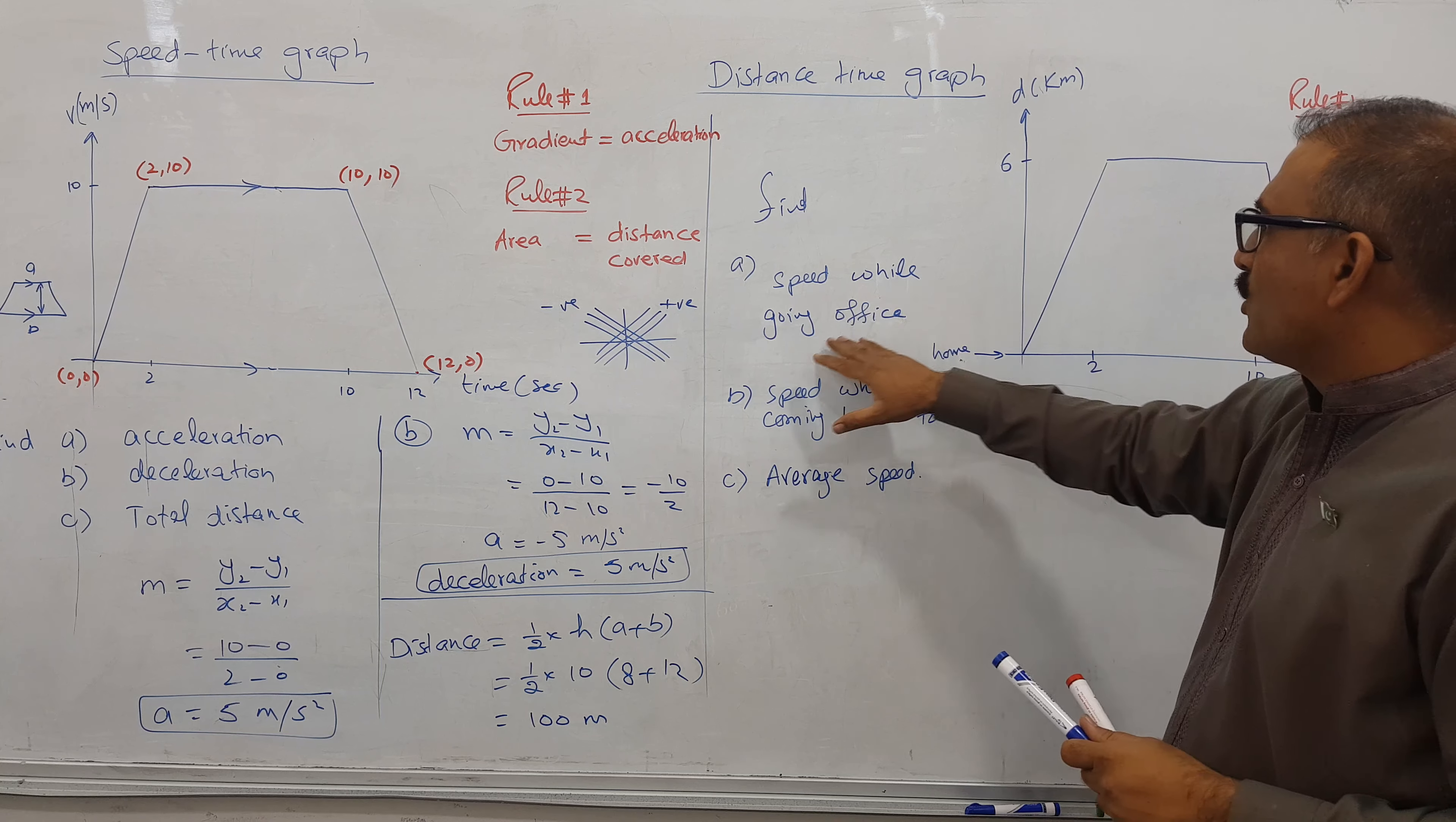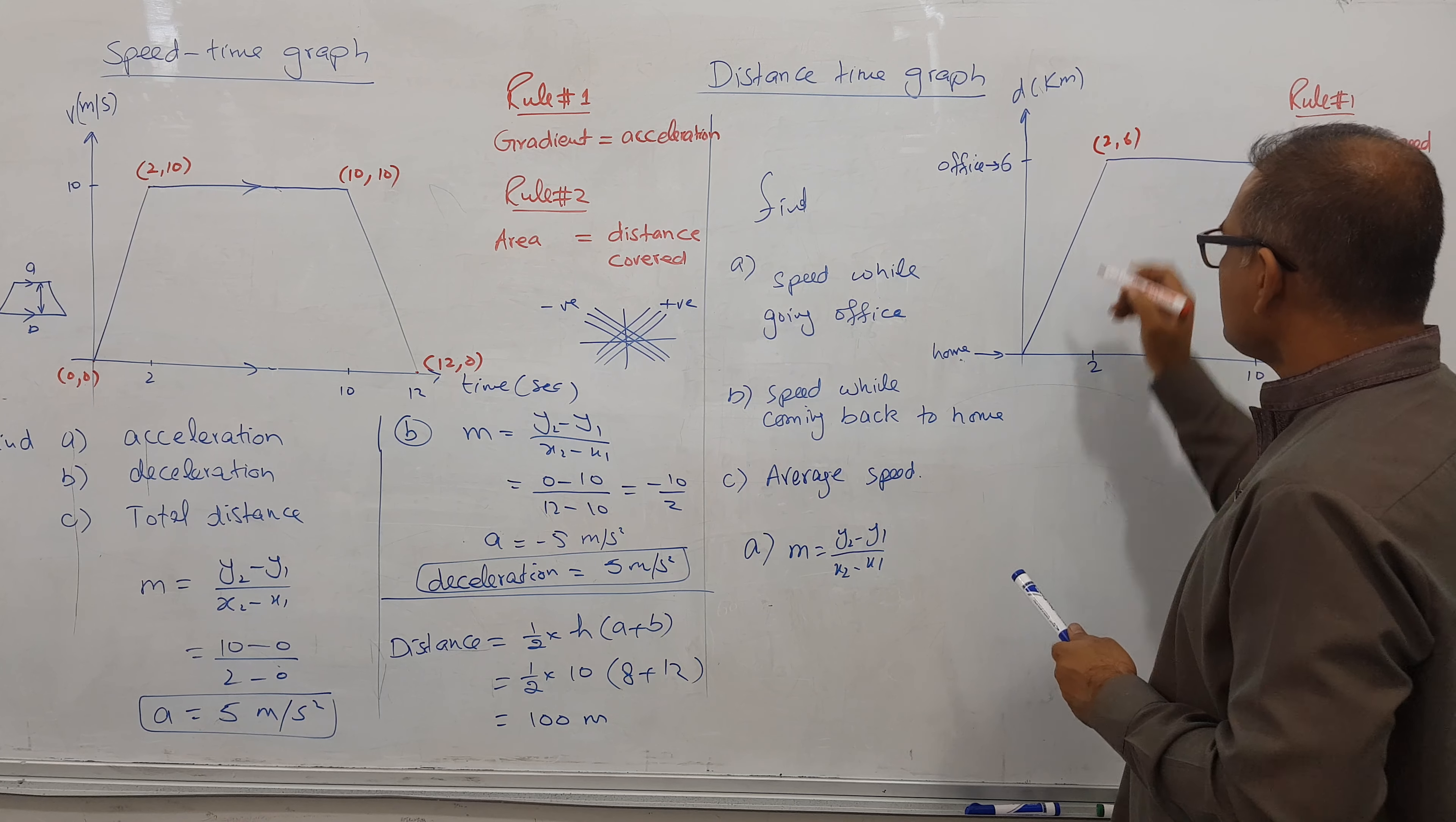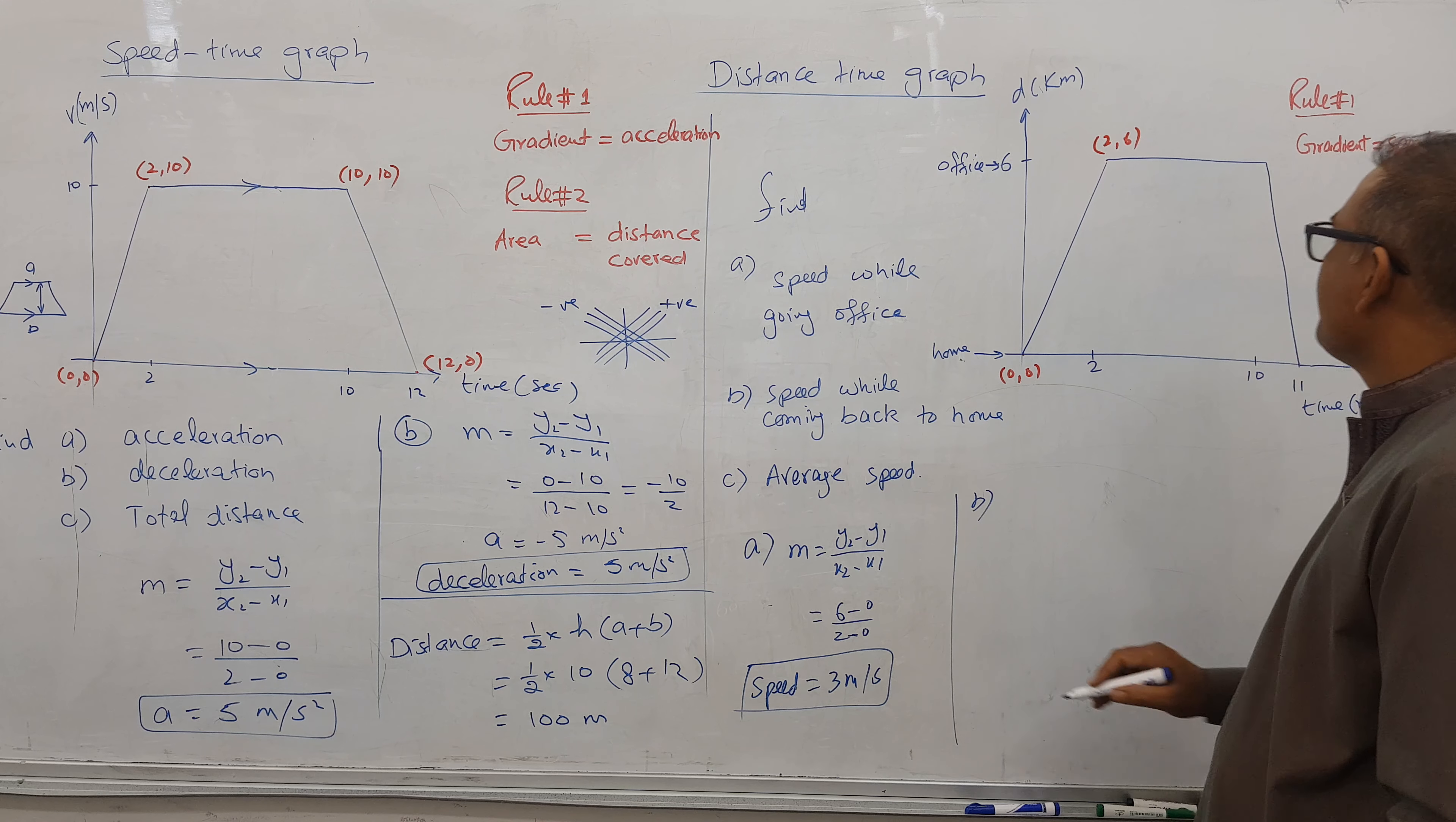We have a situation with home and office. For part A, we need speed while going to office. The gradient formula is y2 minus y1 over x2 minus x1. At this point x is 2, y is 6; here x is 0, y is 0. So 6 minus 0 over 2 minus 0, we got 3 meters per second speed while going away from home.